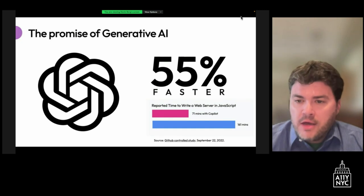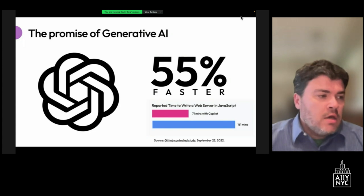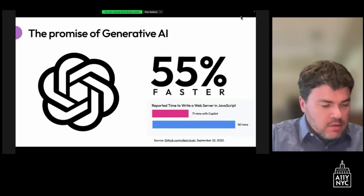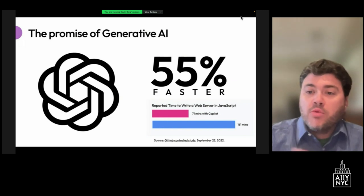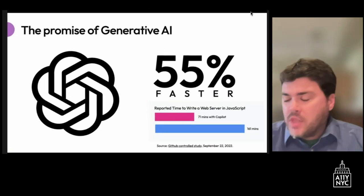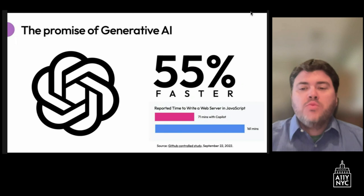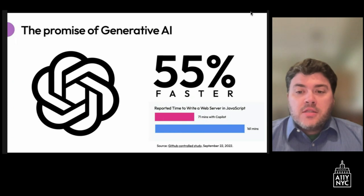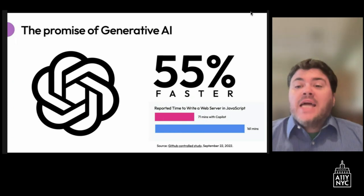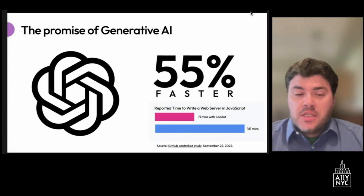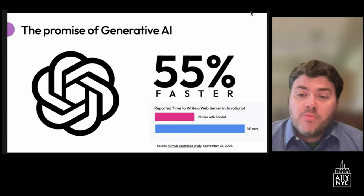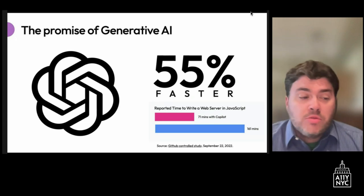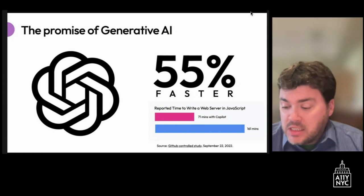They did a study where they had about 100 developers, split in half. Half used GitHub Copilot to write a web server, and the other half didn't. The delta was over 90 minutes — the average time with Copilot was 71 minutes, and without it was 161 minutes.